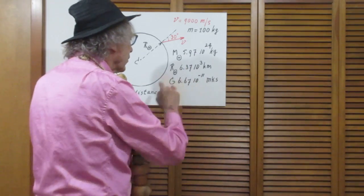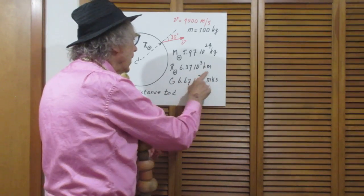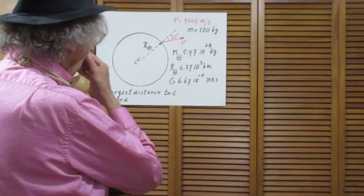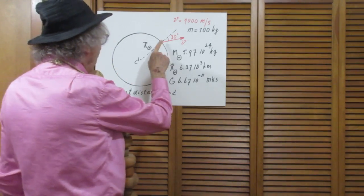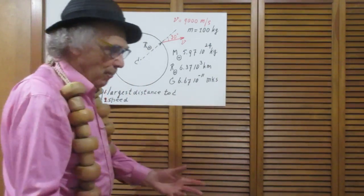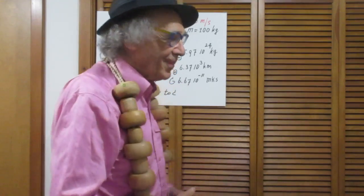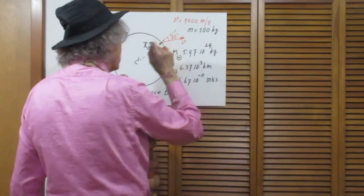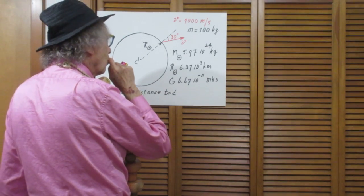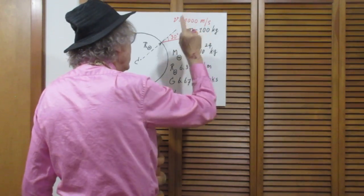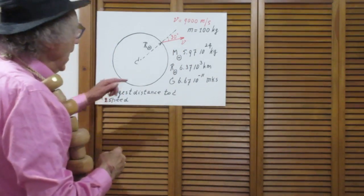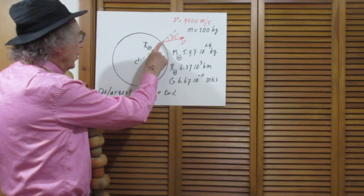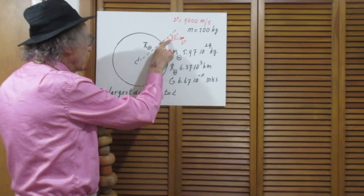And we will all use for the gravitational constant 6.67 times 10 to the minus 11 — that's in MKS units. We shoot an object which has a mass of 100 kilograms, up with a speed of 9000 meters per second — 9 kilometers per second — and we do that at an angle of 30 degrees with the vertical. If you stand here on the earth, this is your vertical, and this angle is 30 degrees.